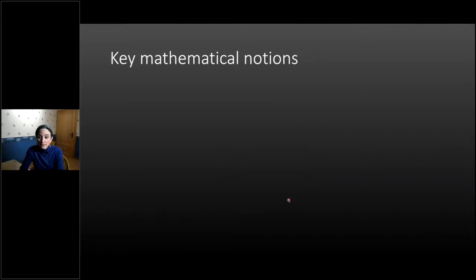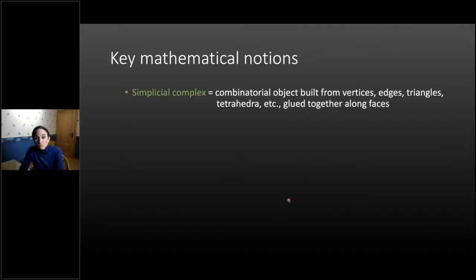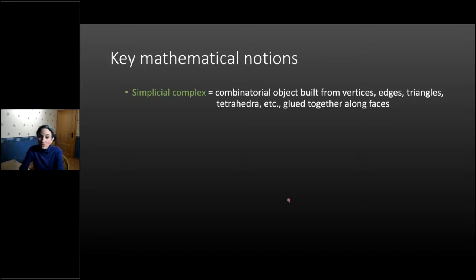Here are the key mathematical notions for TDA. The first and most important is that of a simplicial complex — a geometric object built from points (vertices), line segments (edges), filled-in triangles, solid tetrahedra, and so on, glued together along their faces. The global term for these building blocks is simplices. Vertices, edges, triangles, and so on are examples of simplices. When you have a simplicial complex, you can find various descriptors of it.